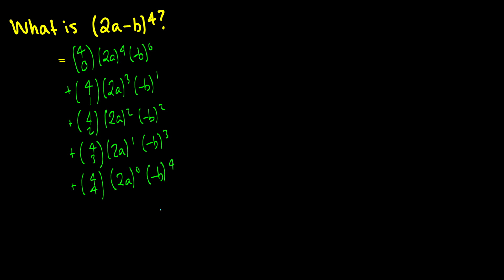The key thing to note is that we take this whole 2a and this whole minus b and plug them into the formula. We basically say x equals 2a and y equals negative b. The important part is that you remember to put the 2 with the term that's getting raised to the power of 4, 3, 2, or 1, because that will change the result if you forget.